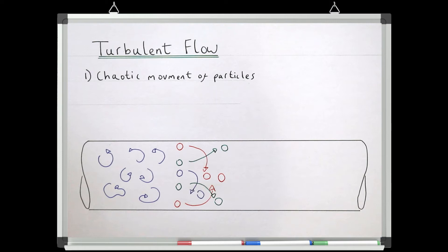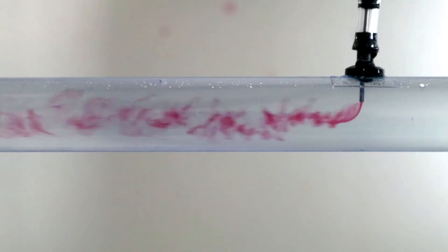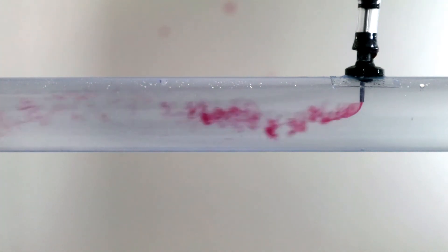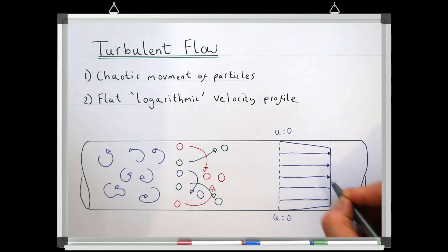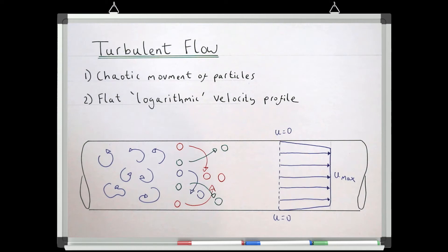Particles are now not just experiencing the velocity at the location where they started out — they're continuously being moved all over the pipe, so they experience a whole range of velocities over a short period of time. This flattens out the velocity profile, because the effect of particles continuously experiencing a large range of velocities is to average out the velocity at any particular location. We still have zero velocity at the wall, maximum velocity at the pipe centreline, and a gradient in between, but the velocity profile is now much more flat with a steeper gradient at the wall. Turbulent velocity profiles can often be described by a logarithmic distribution, which predicts a relatively flat velocity profile.